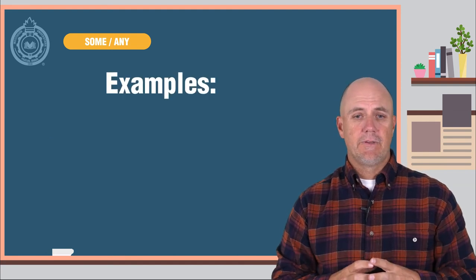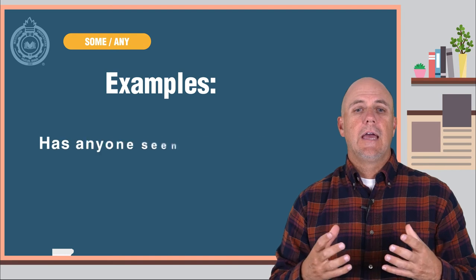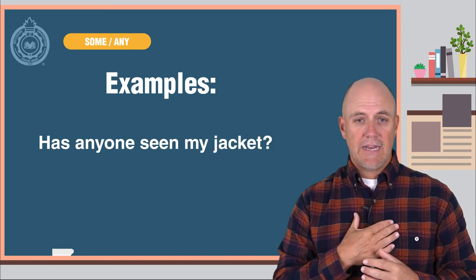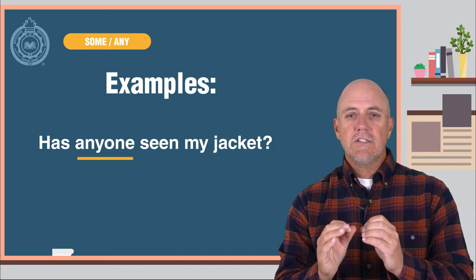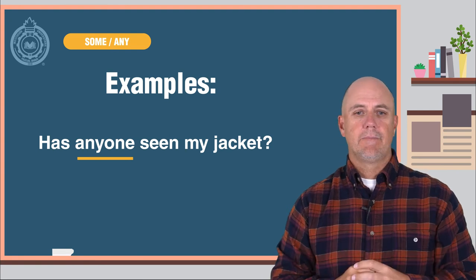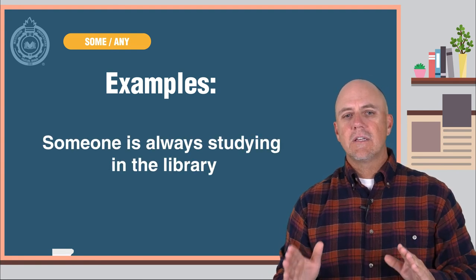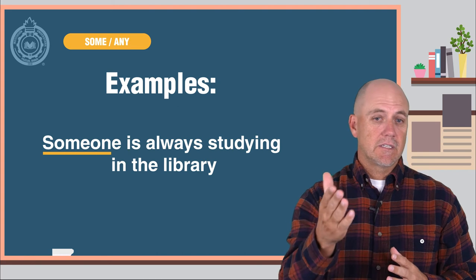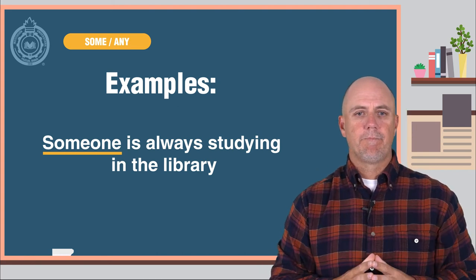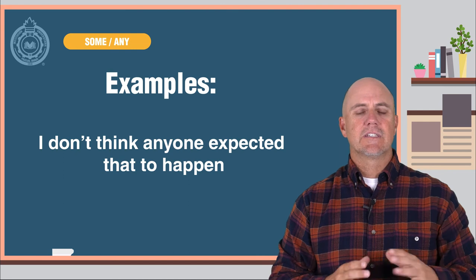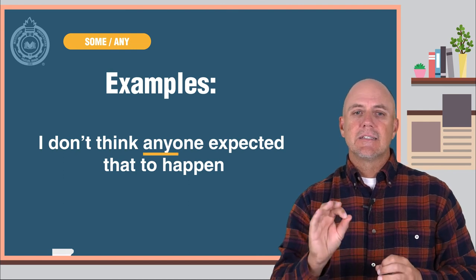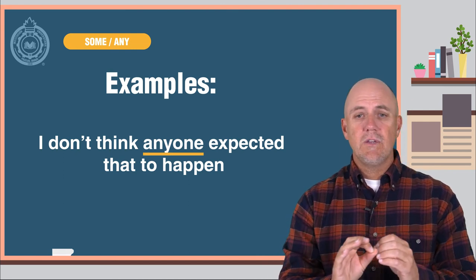Here are some examples. Has anyone seen my jacket? Since this is a question, we use any. Someone is always studying in the library. Since this is a positive sentence, we use some. I don't think anyone expected that to happen. Since this is a negative sentence, we use any.